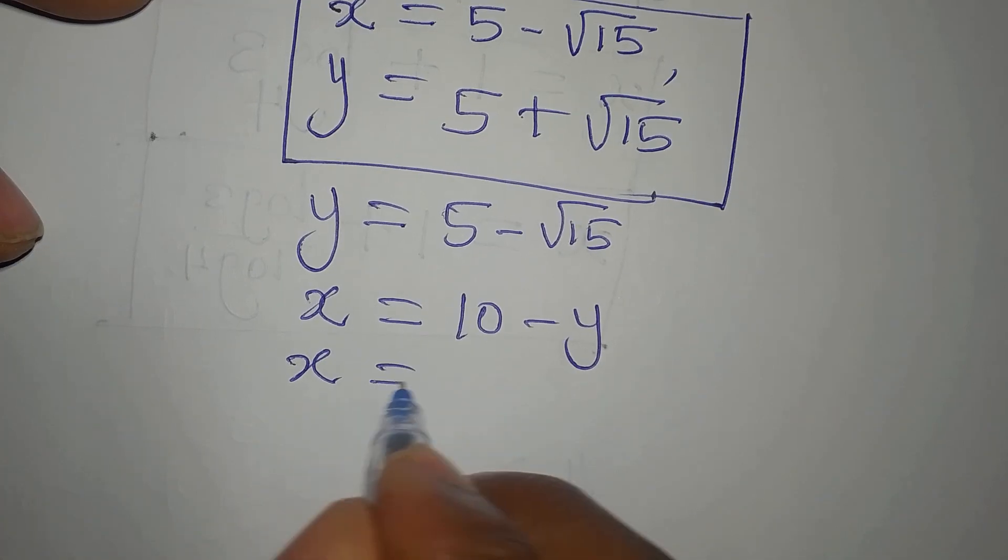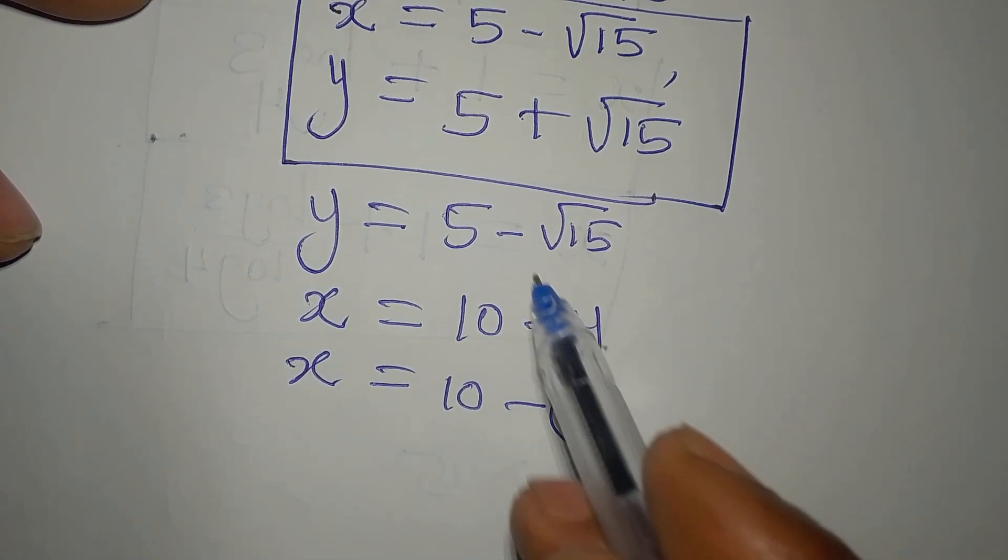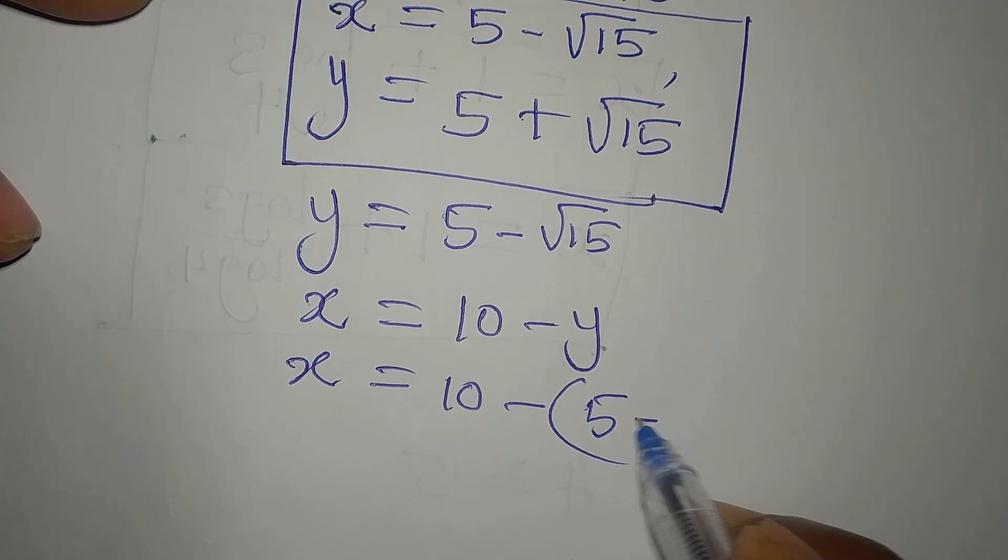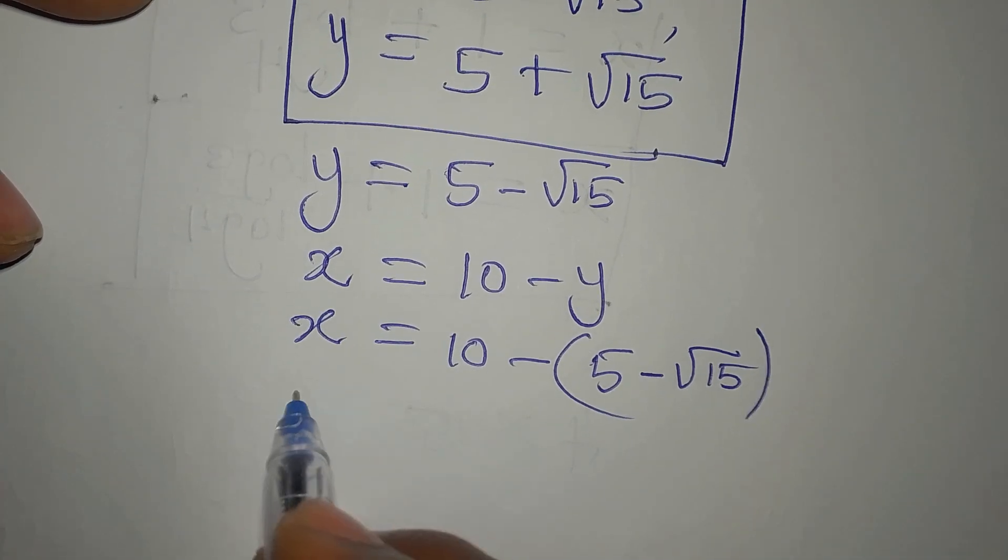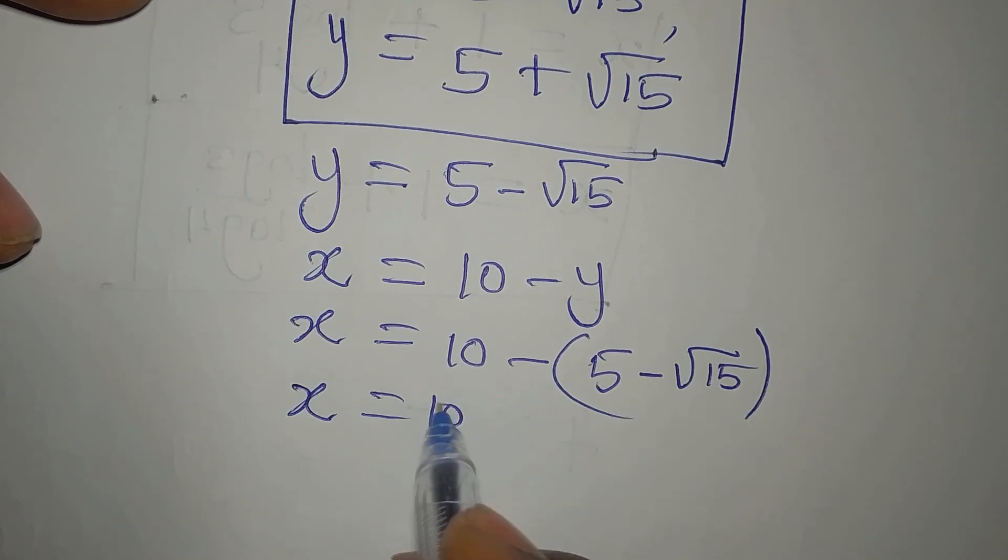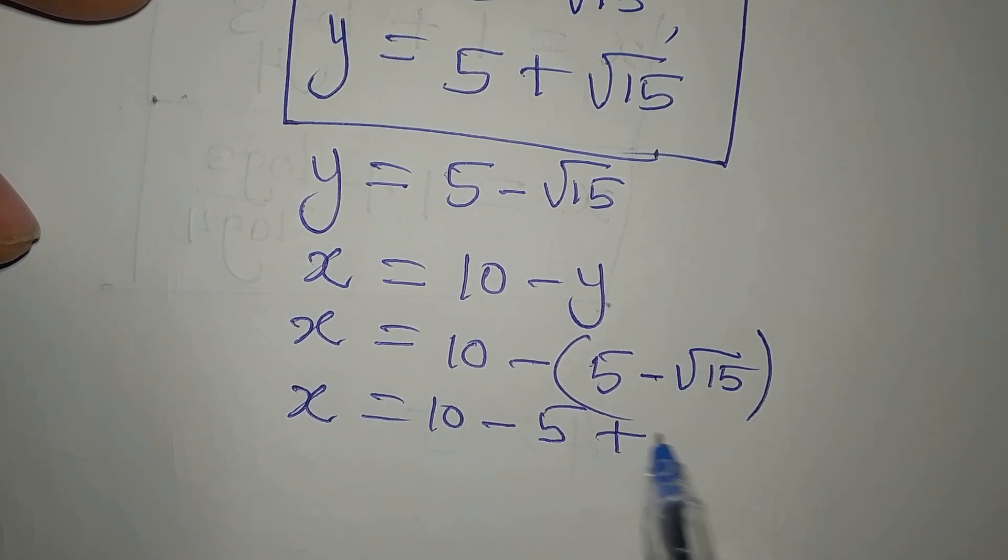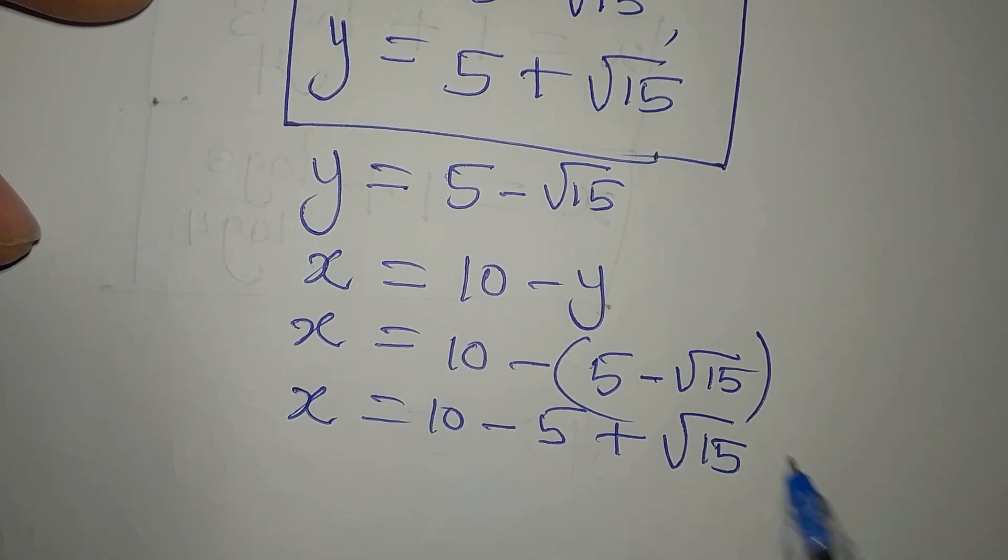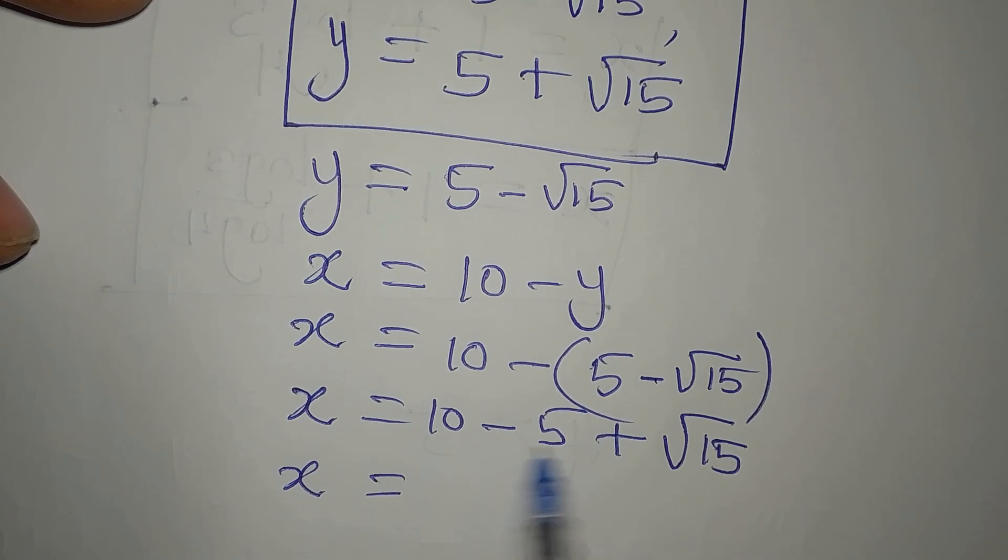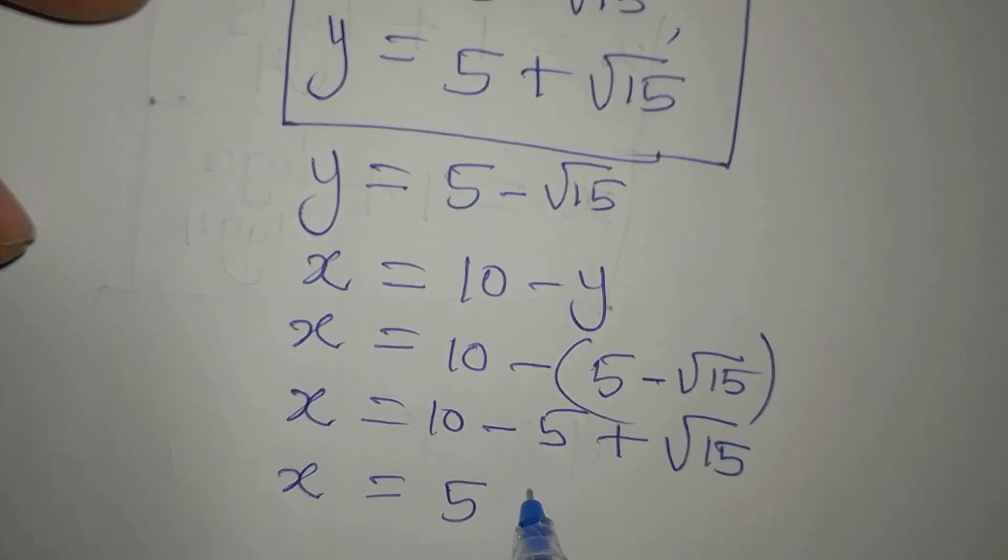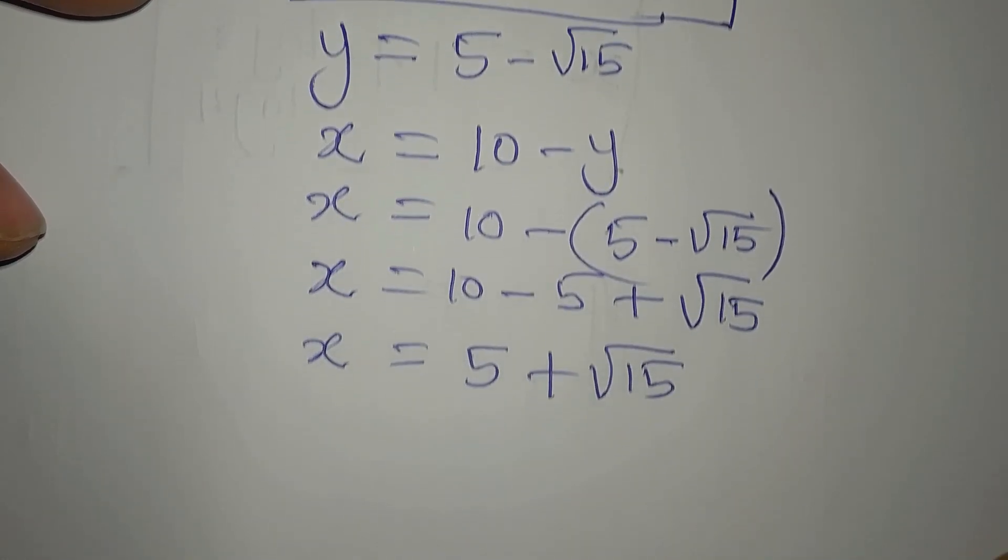So to go ahead now, our X will now be 10 minus open bracket. So Y now is 5 minus root 15. So that our X will be 10 minus 5. Negative times negative is positive. Then we have root 15. So our X now is 10 minus 5 is 5. Then we have plus root 15.